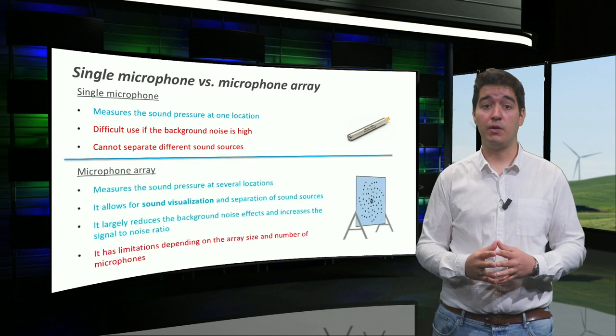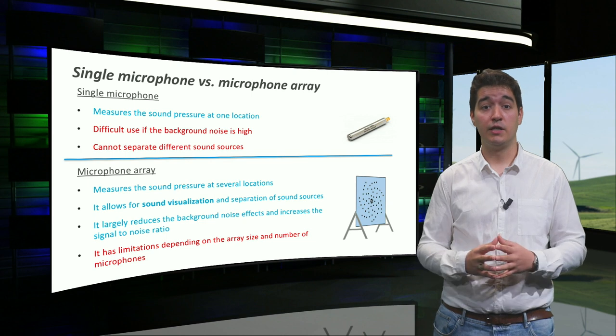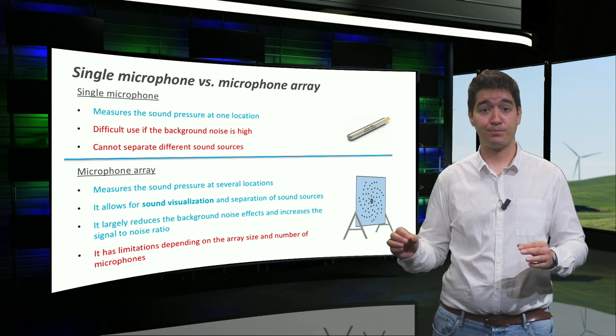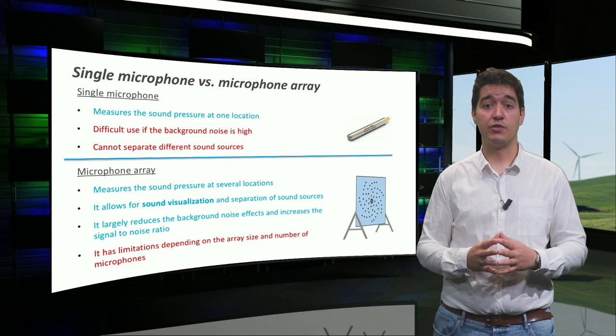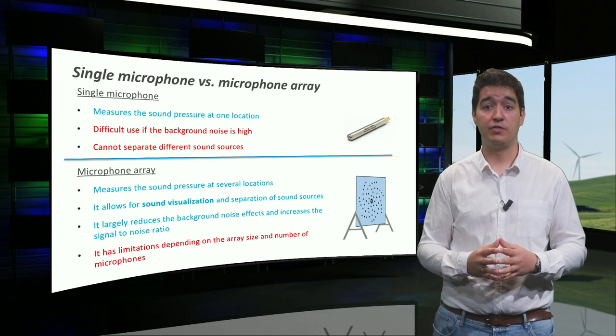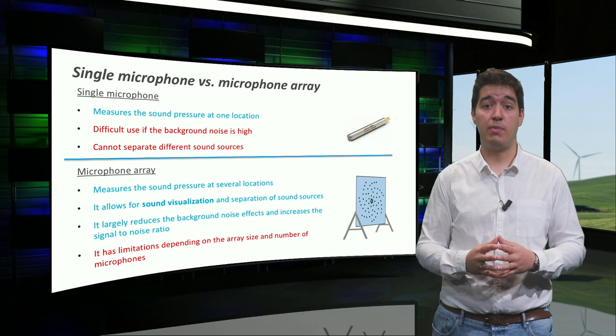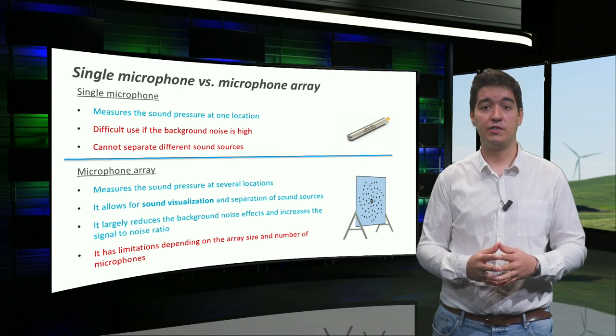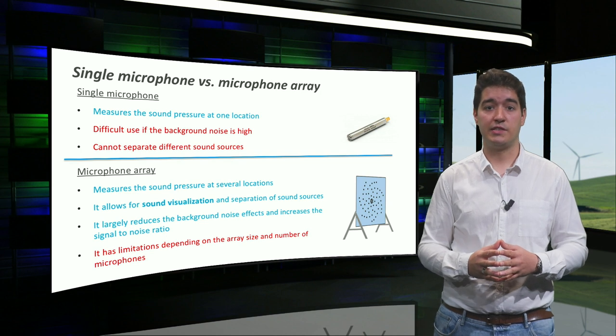In case we use several microphones simultaneously in an array, we can sample the sound field at several locations. This allows for sound visualization and the separation of sound sources, as well as a large reduction of the effects of background noise. However, these devices also have limitations, as we will discuss later.